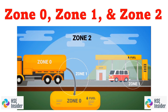One common classification system used for this purpose is the zoning system, which divides a facility into different zones based on the likelihood of an explosive atmosphere being present. The three main zones are Zone 0, Zone 1, and Zone 2.